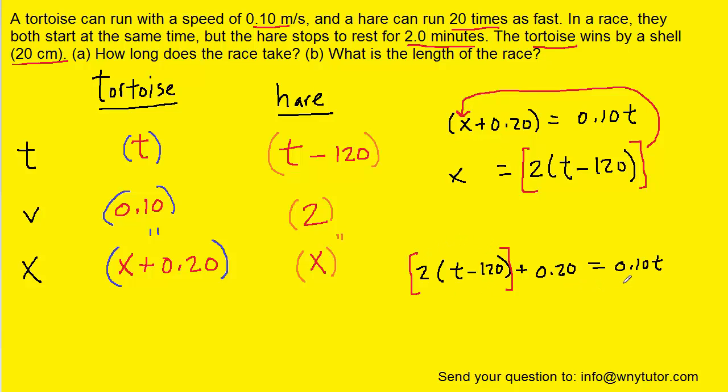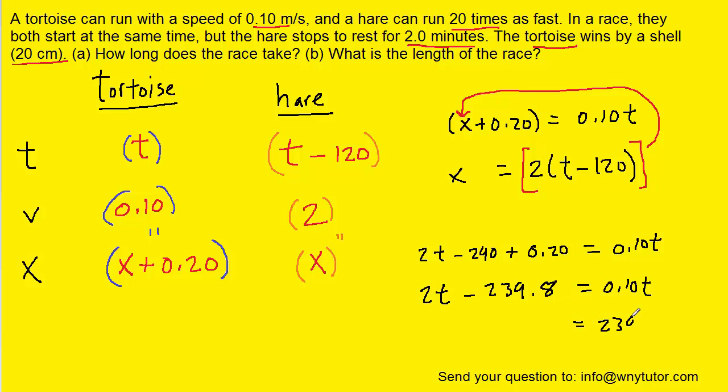So we've come down here to show that work. Remember that the term in brackets is technically x, as was shown in the second equation. We can now solve this equation for t, and to do that we can distribute the two. We could then combine these like terms right here. Let's add the 239.8 to the right-hand side, and then subtract the 0.10t to the left-hand side. And then we can divide both sides by 1.9 to solve for the time t.